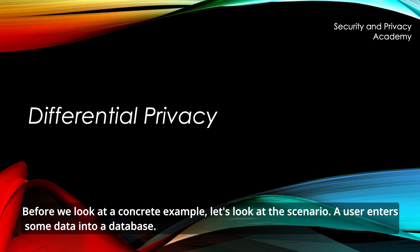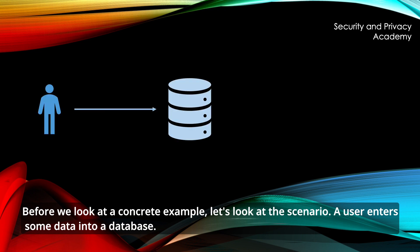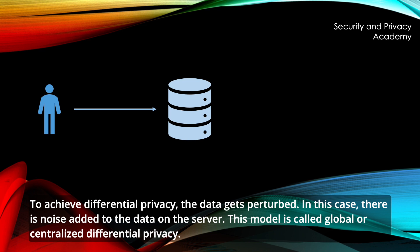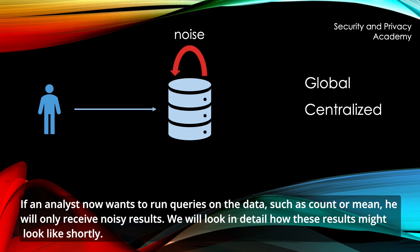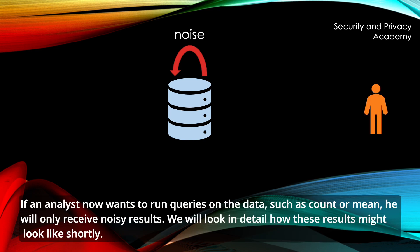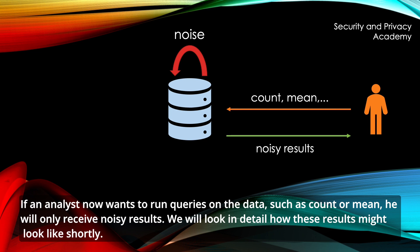Before we look at a concrete example, let's look at a scenario. A user enters some data into a database. To achieve differential privacy, the data gets perturbed — in this case, noise is added to the data on the server. This model is called global or centralized differential privacy. If an analyst now wants to run queries on the data, such as count or mean, they will only receive noisy results. We will look in detail at how these results might look like shortly.